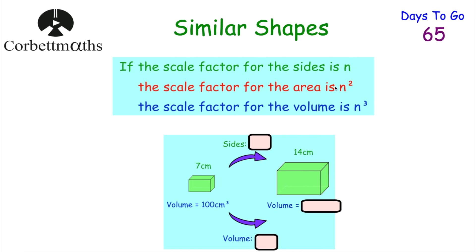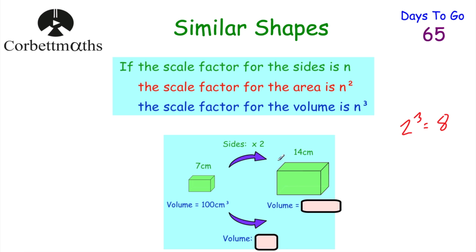Let's go back to the revision card and look at volume. We've been focusing on area, where scale factor for sides is n and scale factor for areas is n squared. Now for volume: if the scale factor for the sides is n, the scale factor for the volumes is n cubed. Looking at these two cuboids — one has length 7 cm and the other 14 cm, so the scale factor for the sides is 2. Then 2 cubed = 8, so the volume of the larger cuboid is 8 times bigger. The smaller cuboid has volume 100 cm³, and 100 × 8 = 800 cm³ for the larger one.